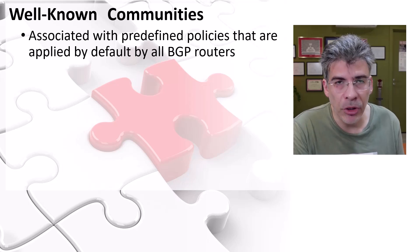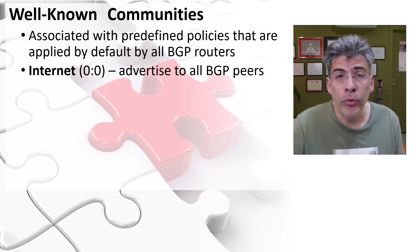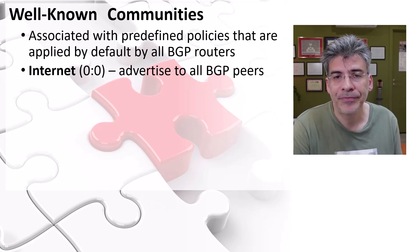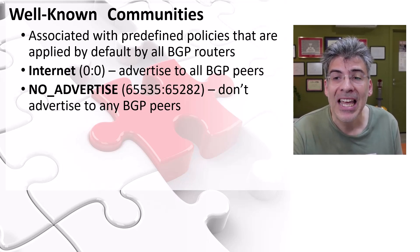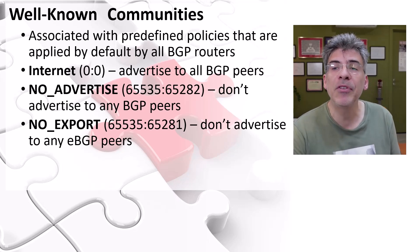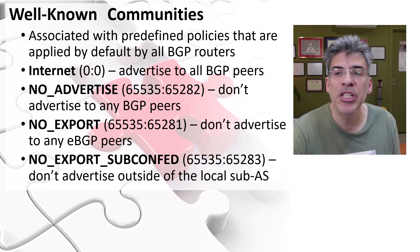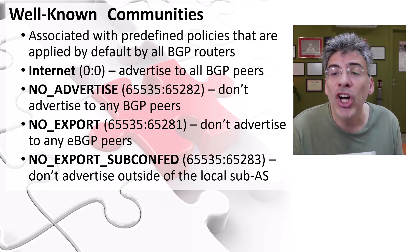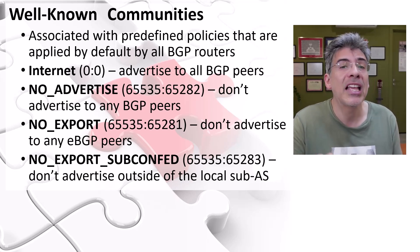The first well-known community is the default community — some call it the internet community or network community — which is applied to all routes by default, simply advertising the prefix to all BGP neighbors. Then there is the no-advertise community, which tells a BGP router not to advertise the prefix to any BGP neighbors. The no-export community tells the router not to advertise the prefix to any eBGP neighbors. Finally, the no-export-sub-confed community tells a BGP router not to advertise the prefix outside the local sub-AS, and is used in the context of BGP confederations.